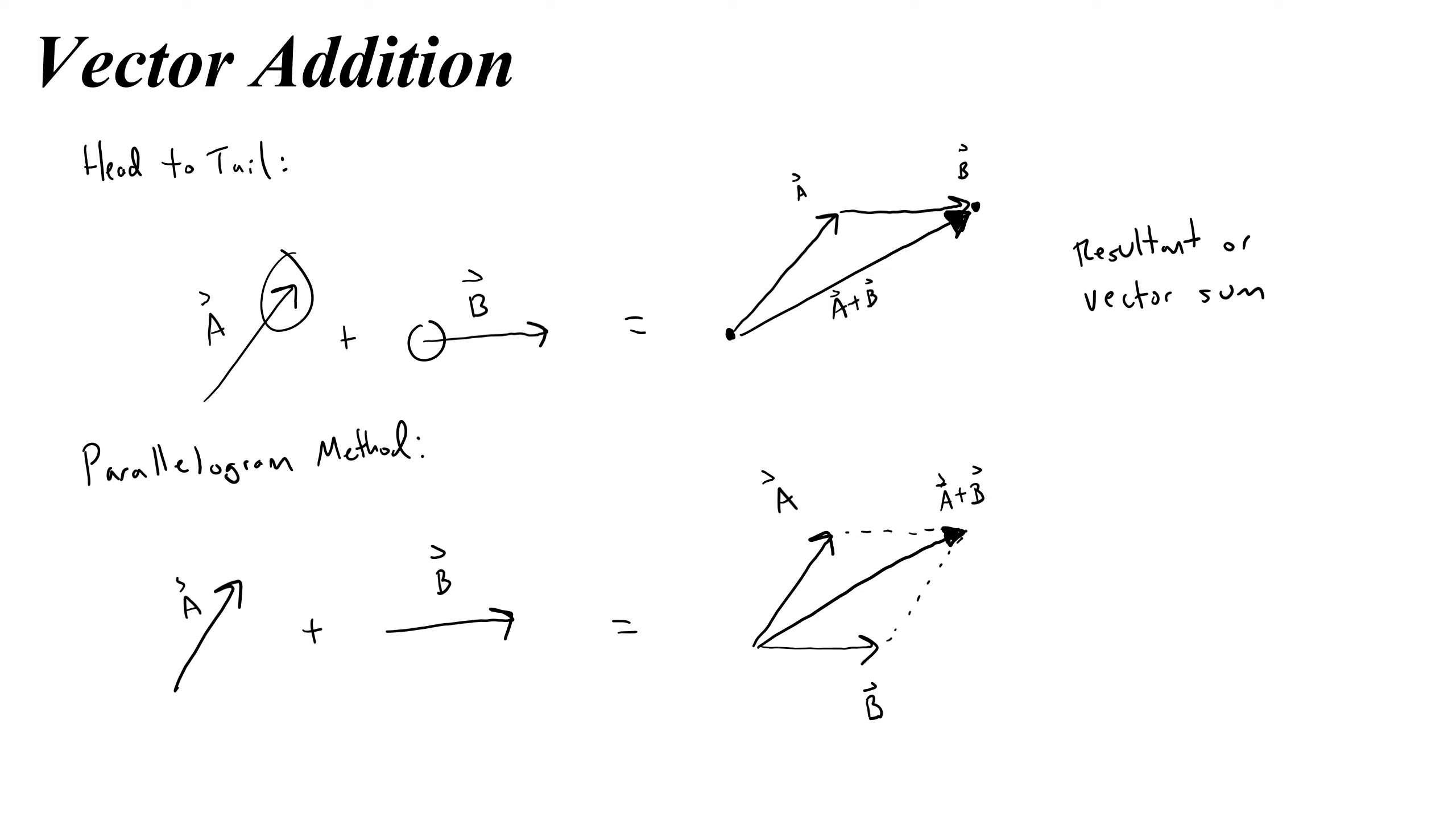Now you'll notice that we would get this exact same shape if we just did the head-to-tail method again, but starting with b. So if I drew b here, that's b, and then a with its tail at b's head, then I would make a parallelogram. So either of these are fine graphical ways for adding two vectors together. And it emphasizes the fact that if you're going to add them head-to-tail, it actually doesn't matter which order you start, because you can do b plus a or a plus b. You'll get to the same spot.